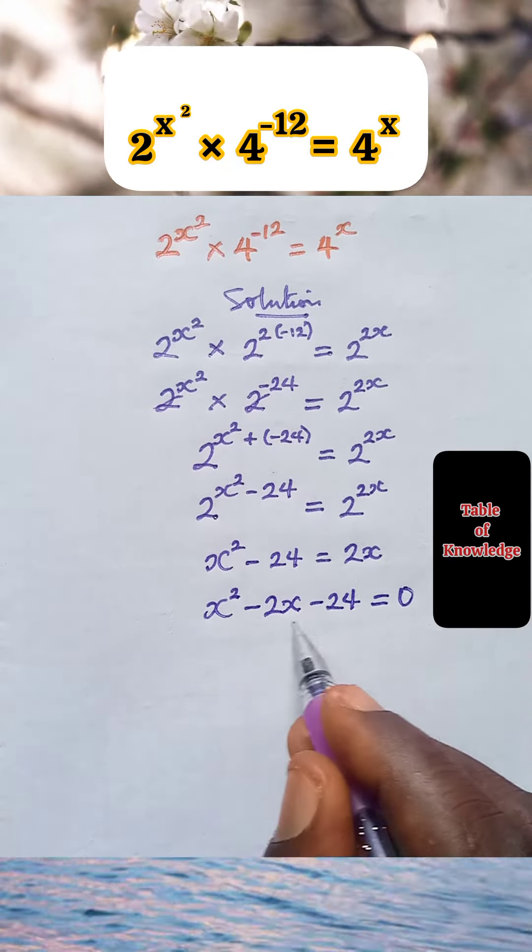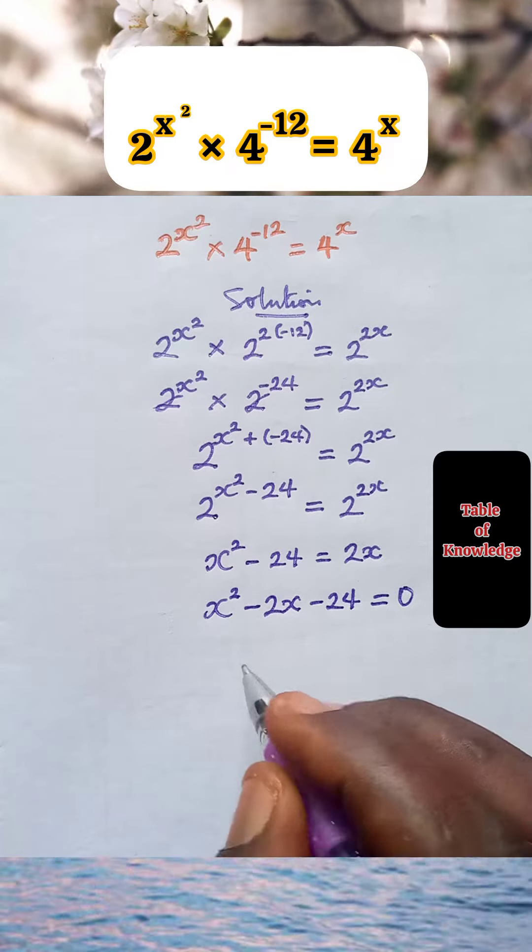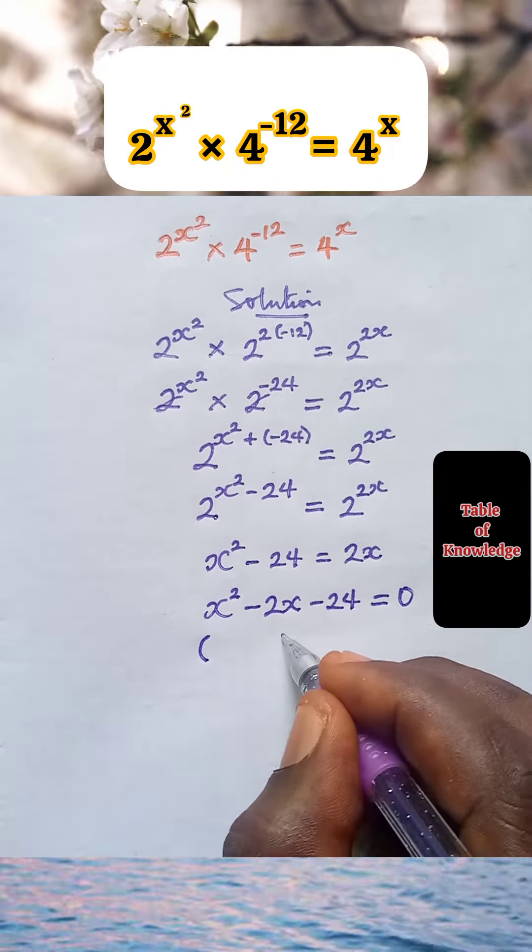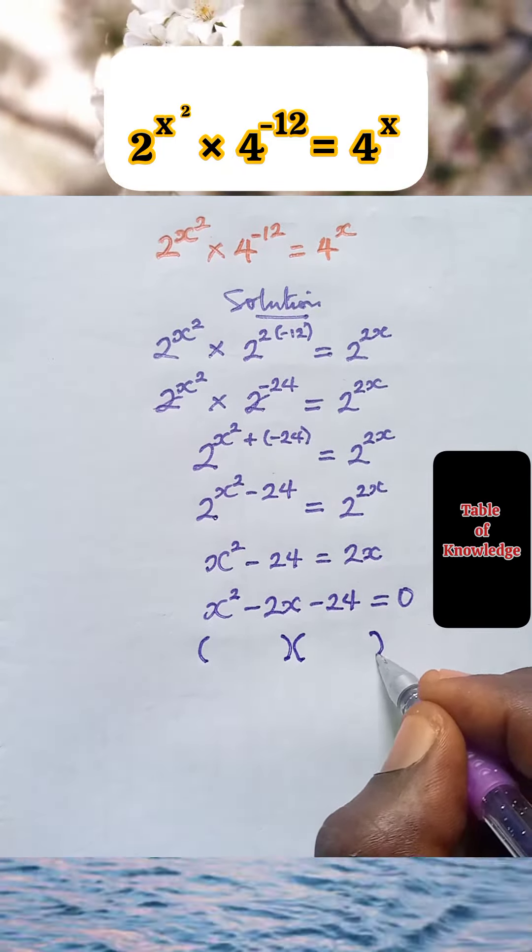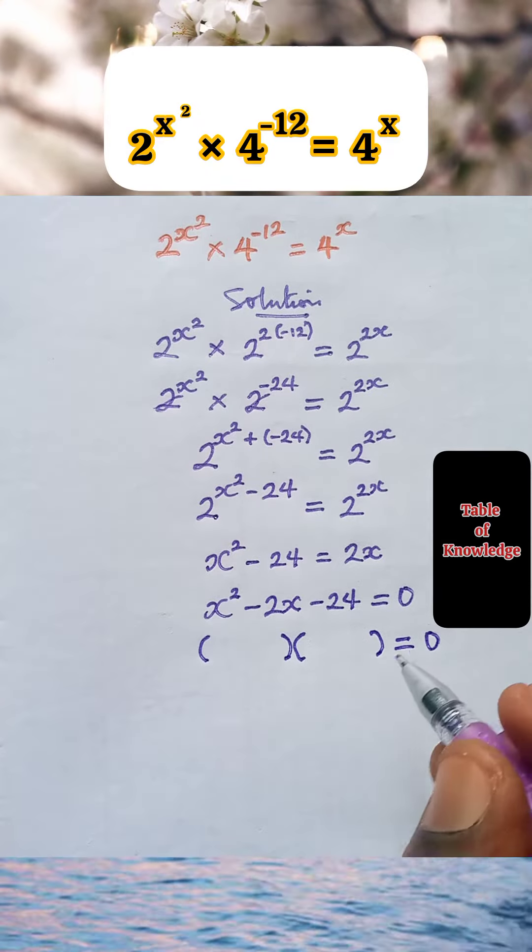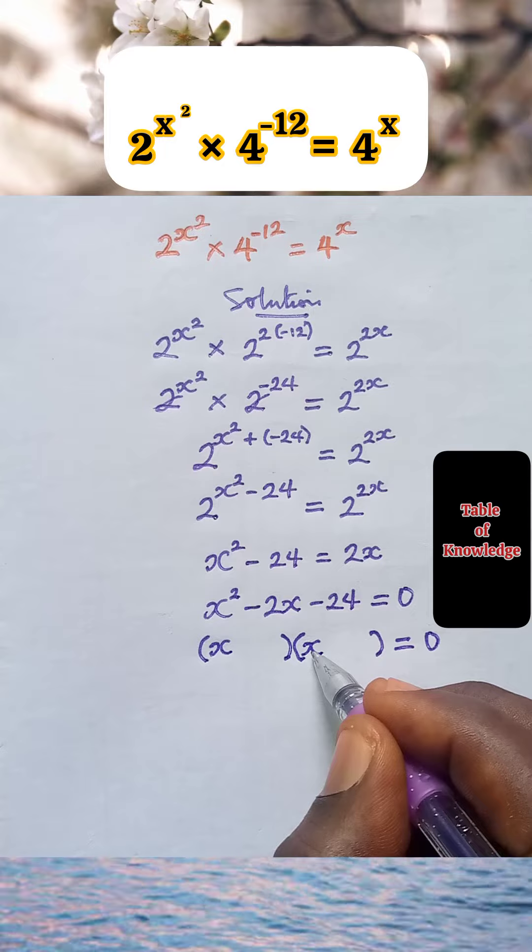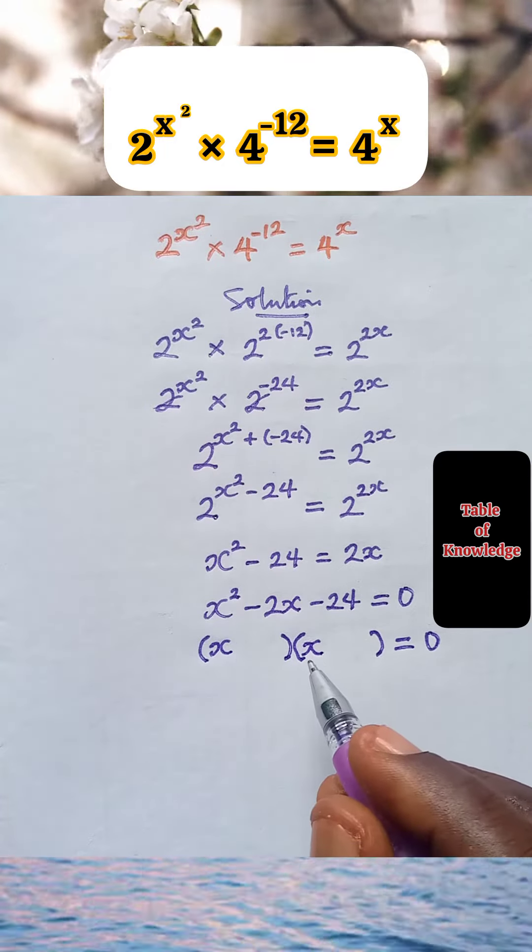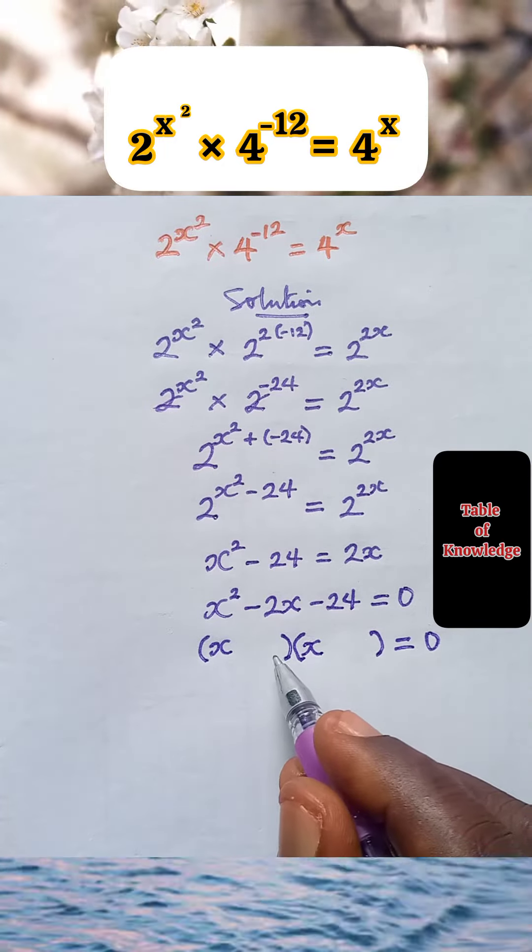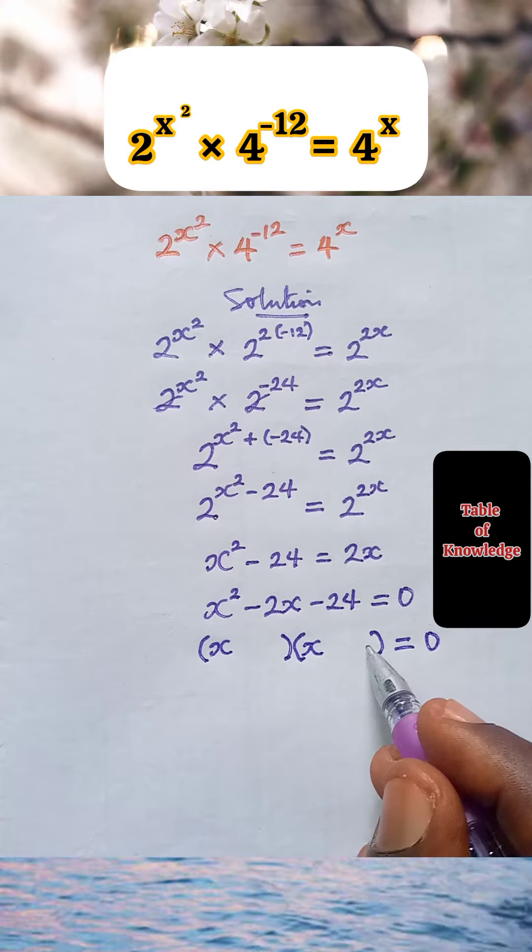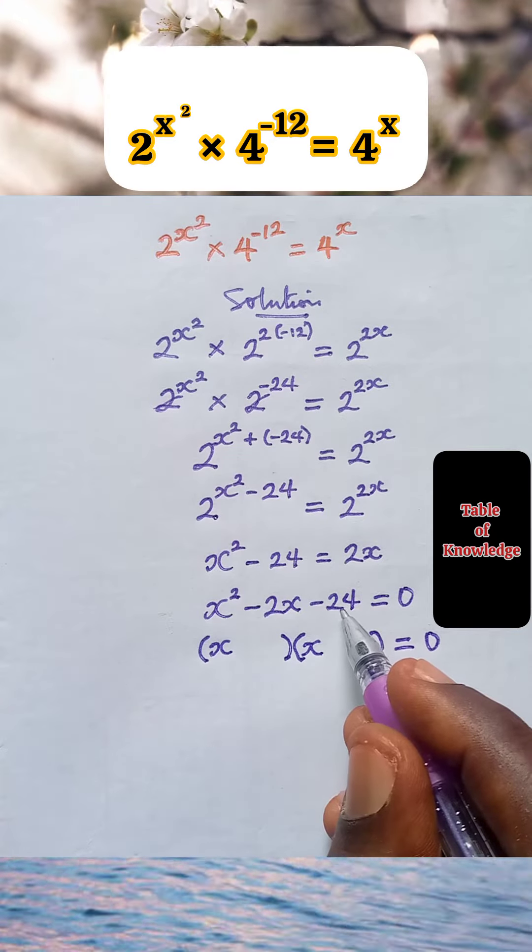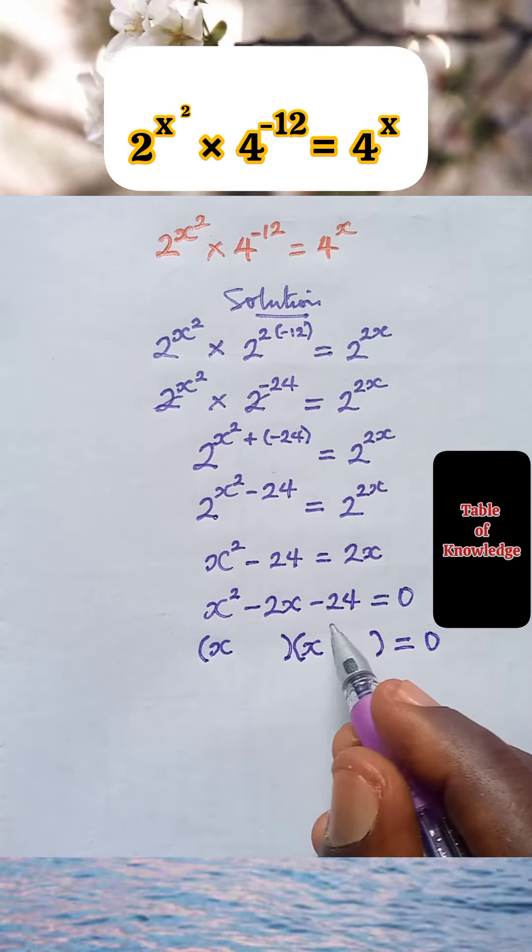Now this is a quadratic equation, we are going to factorize. We open two brackets. This x square is x times x, gives us back the x square. So look for two numbers, one here and one here, so that we multiply them to get 24.